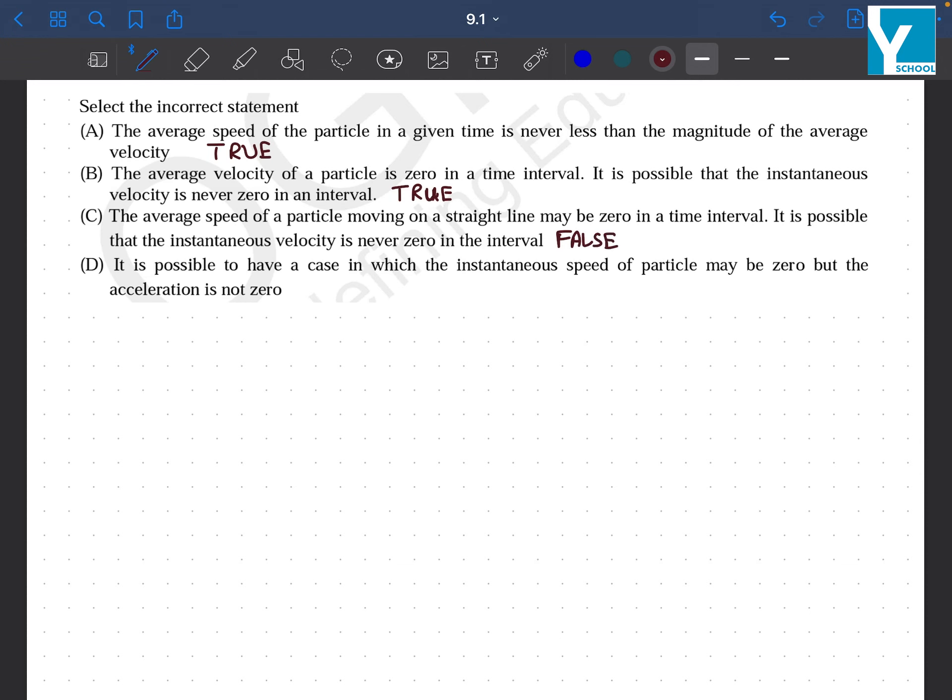It is possible to have a case in which the instantaneous speed of a particle may be zero, but the acceleration is not zero. Yes, this is true, and this is when the object reaches the top of its trajectory when we throw something upwards.